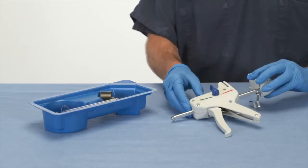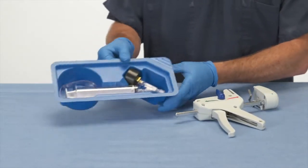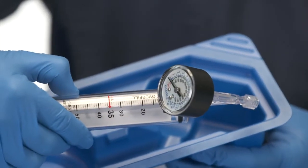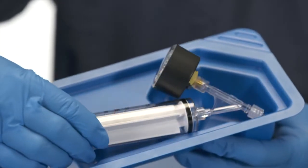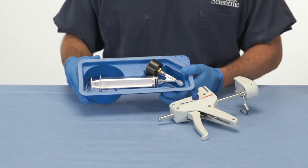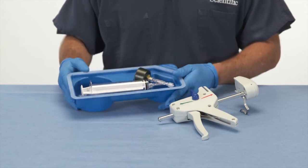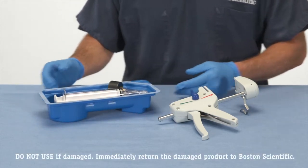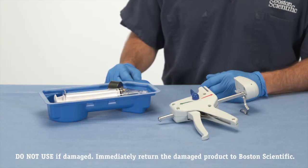The syringe gauge assembly component of the Alliance 2 Integrated Inflation System is supplied ETO Sterilized in a sealed tray. Carefully examine the unit to verify that neither the contents nor the sterile package has been damaged during shipment.